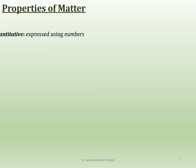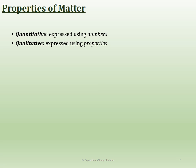Two important words for studying matter are quantitative and qualitative. Quantitative study uses numbers — how much quantity is required to change from one state to another. You will use this a lot in lab calculations. Qualitative study examines the properties — for example, does the color change, or does it produce gas? We're just looking at the quality of something.